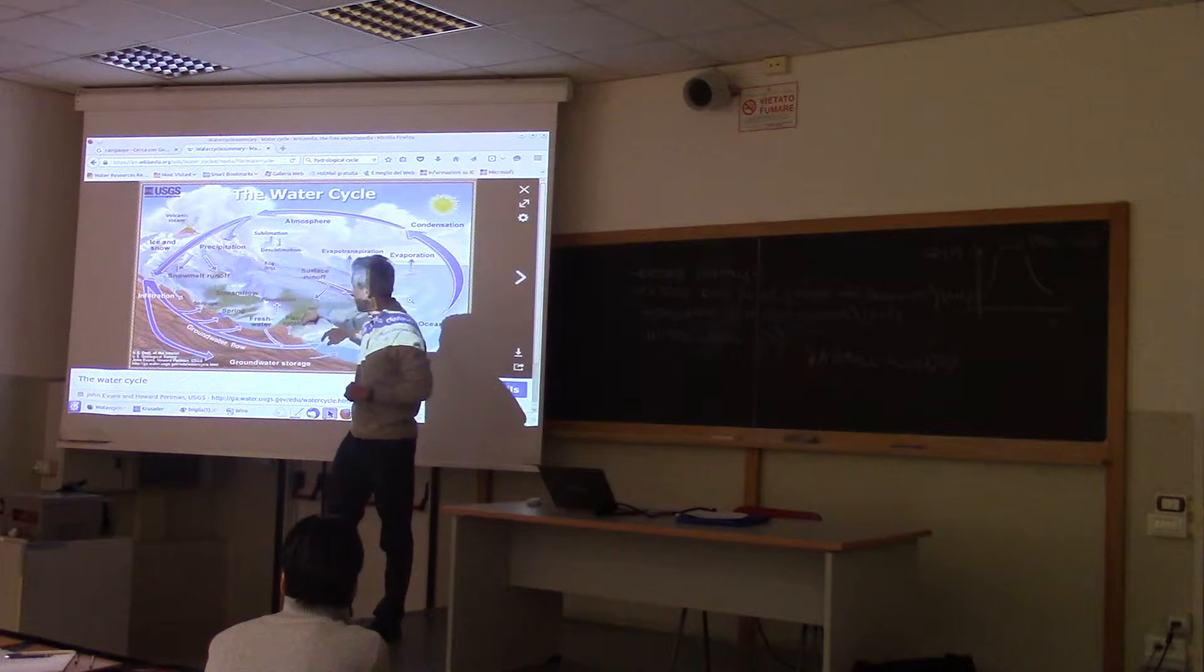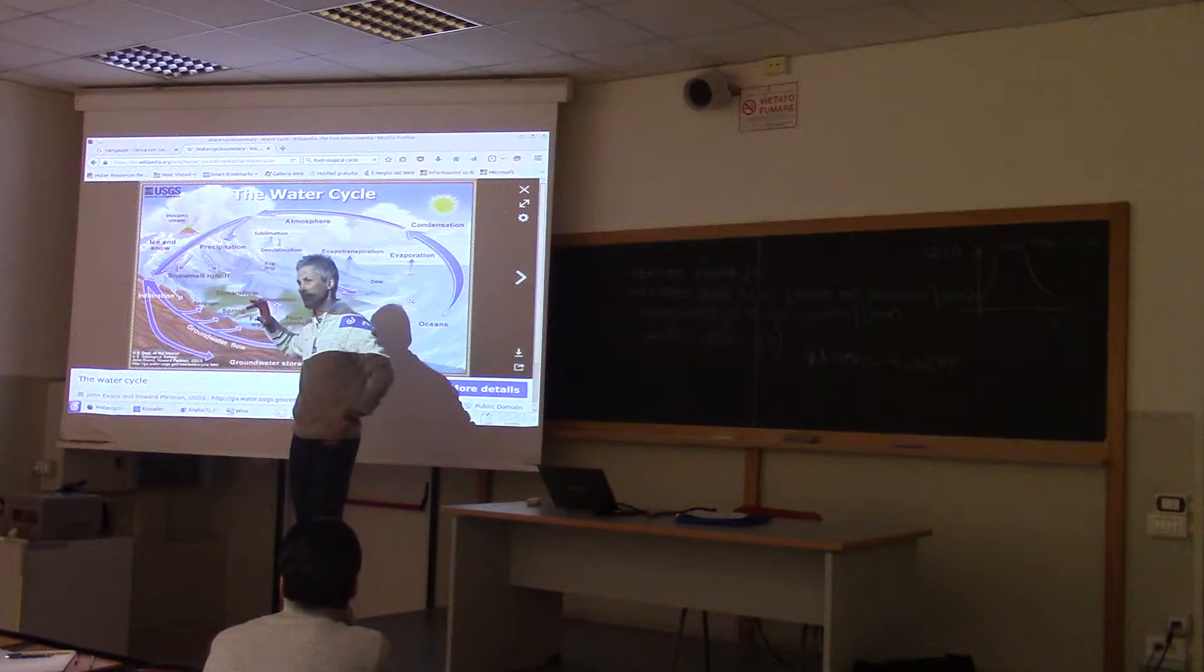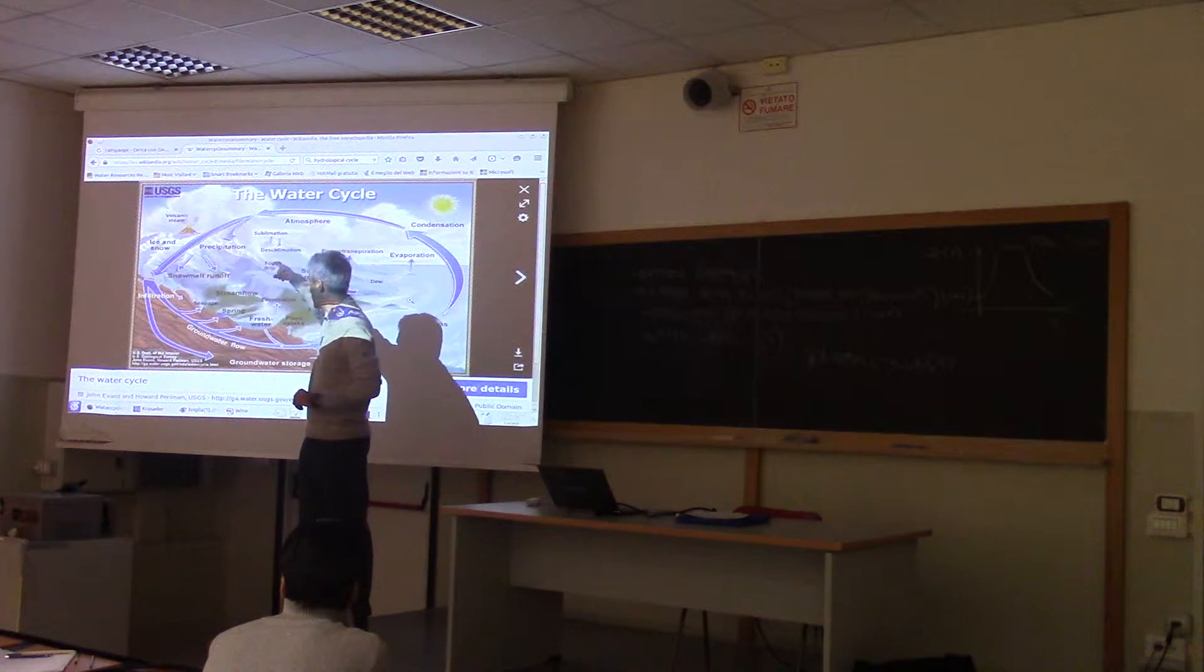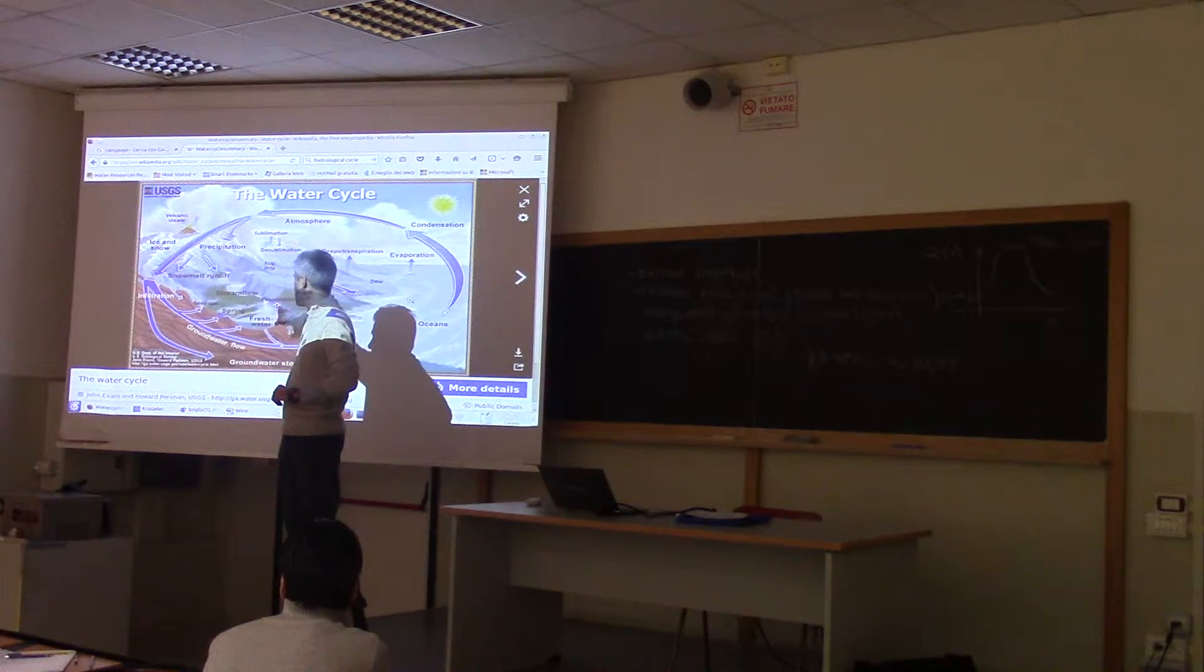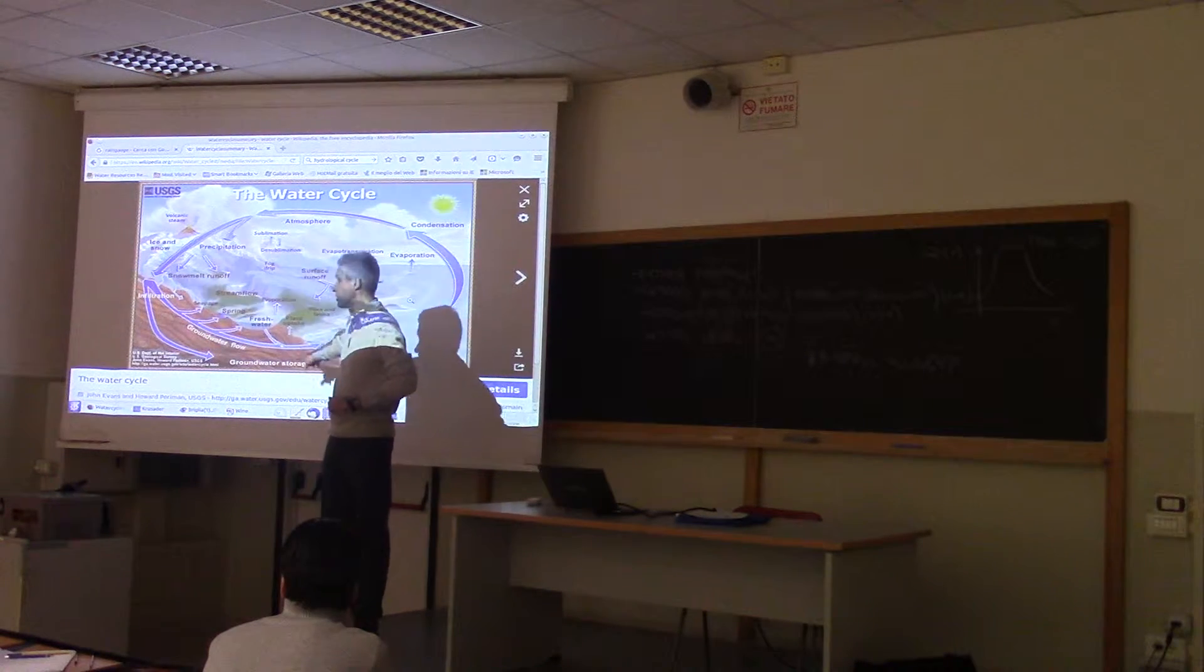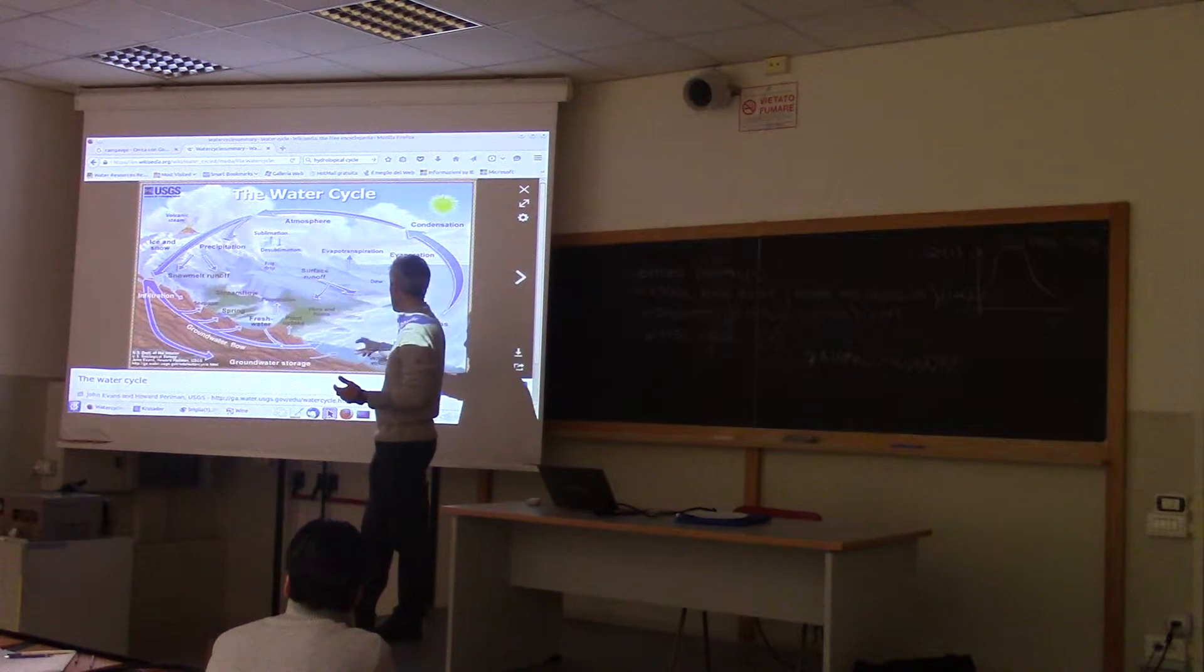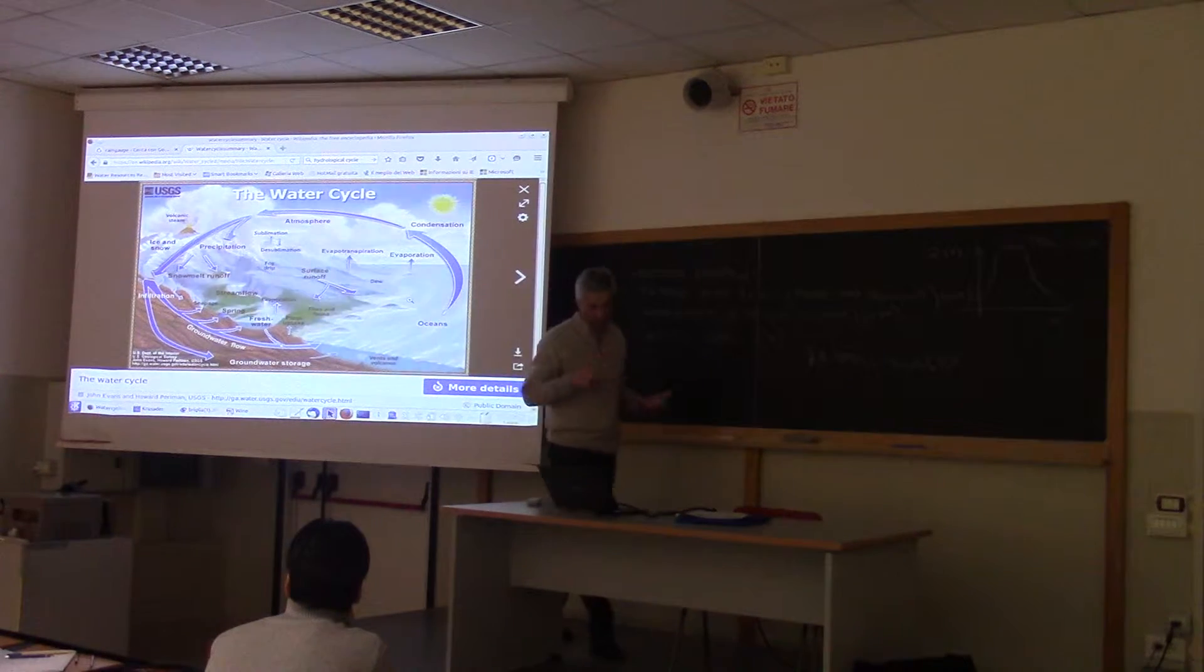Precipitation. And volcanic steam is something that recently appeared because we are broadening our vision. And then ice and snow, runoff, stream flow, evaporation from free water surfaces. And then groundwater flow, groundwater storage. You see the difference. And jets and volcanoes, everything. It's extremely interesting to see.